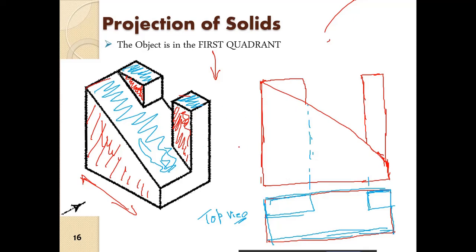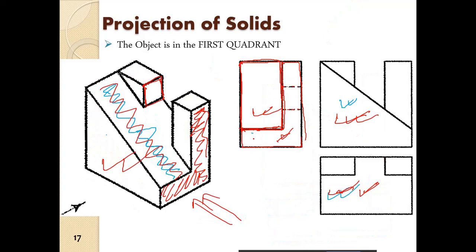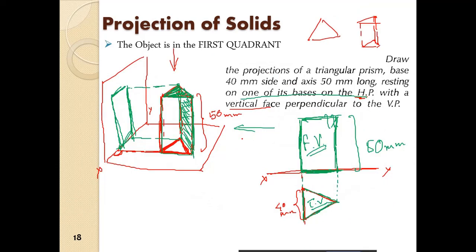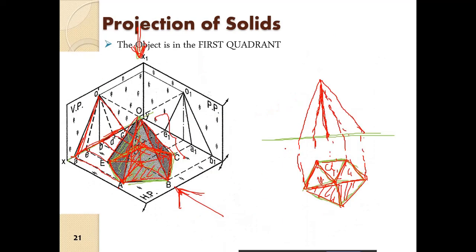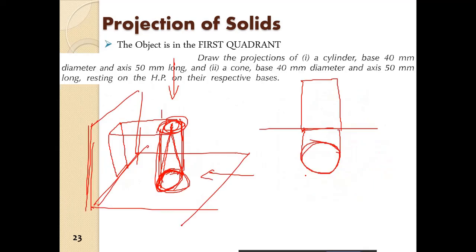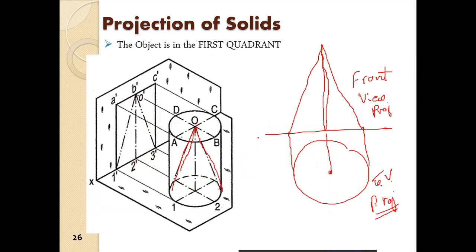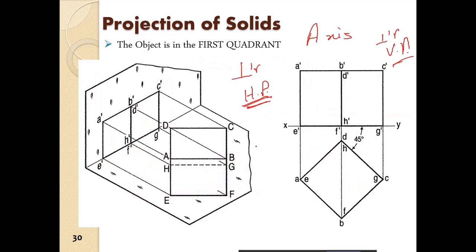So here we have an object — we develop the top view, front view. Then we move on to simpler objects. Here we have a triangular prism with a base of 40 mm side and axis 50 mm long. We saw how it is resting on the horizontal plane and how it looks in the top view and in the front view. This is the top view and this is the front view — so this is the solution.